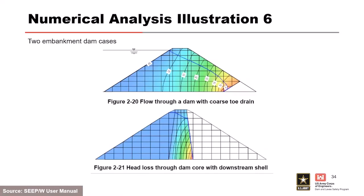Here are a couple more numerical model examples showing similarity between numerical results and flow nets. In one case the downstream toe drain was not modeled, and in another the downstream shell was not modeled since it was assumed much more permeable than the adjacent embankment materials and not of interest — saving the effort of characterizing material properties for zones that don't affect the analysis.